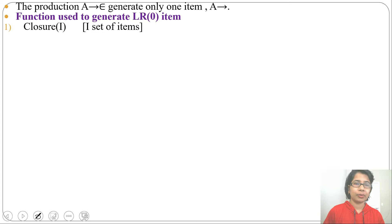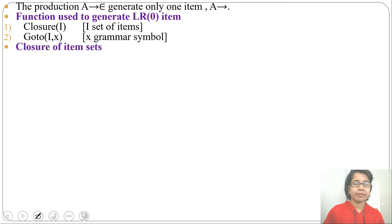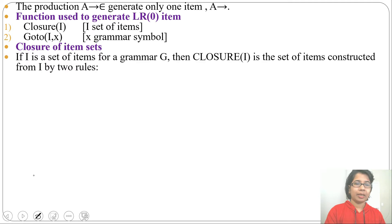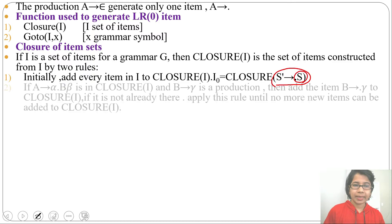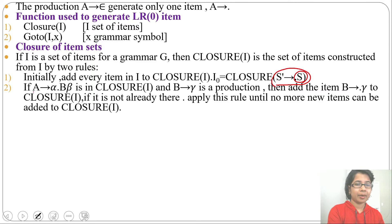To generate LR0 items, there are two functions: closure and goto. Closure(I), where I is a set of items: if I is the set of items for grammar G, then closure(I) is constructed by two rules. First, write the augmented grammar production with the dot. Second, if there is a production A → α•Bβ (dot before B), and B has a production B → γ, then add B → •γ to the closure.